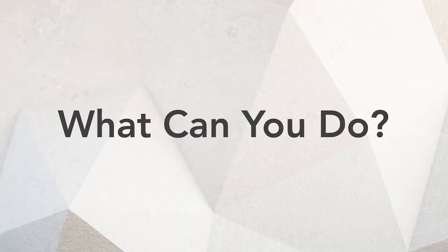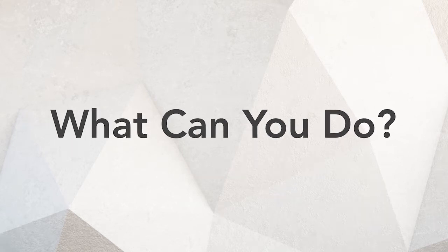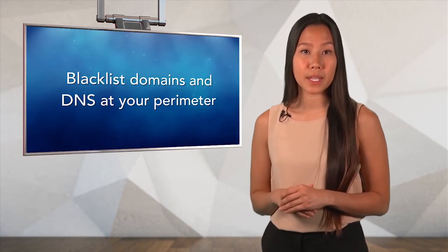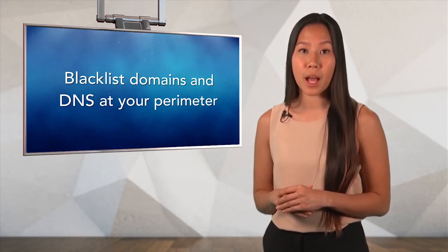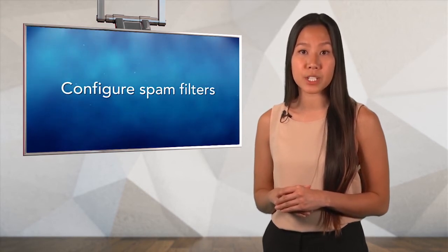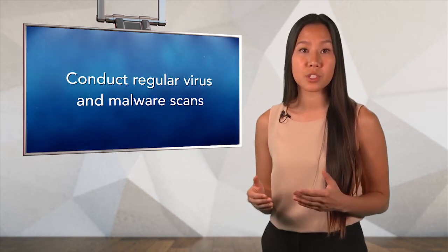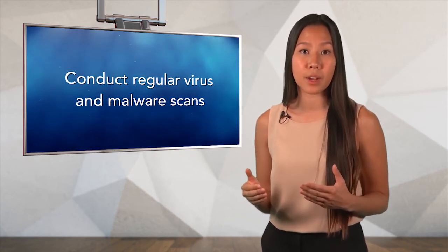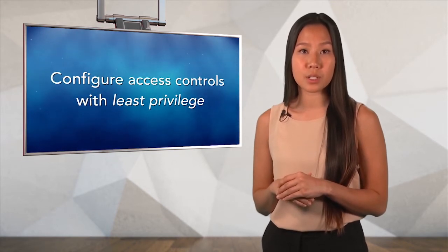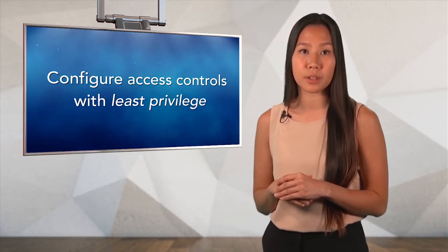What can you do to prevent this type of attack? Organizations can implement the following preventative measures: Apply the patch for this vulnerability. Blacklist the domains and DNS associated with the malware at your perimeter. Configure spam filters to prevent phishing email from reaching end users. Anti-virus and anti-malware solutions should be set to automatically conduct regular scans and apply definition updates. Configure access controls including files, directory, and network share permissions with least privilege in mind.